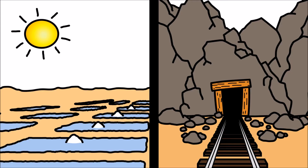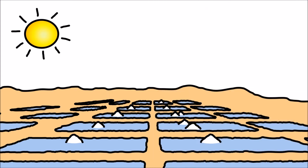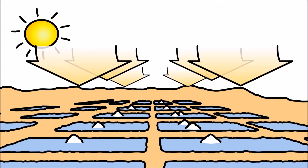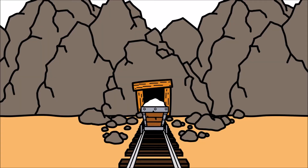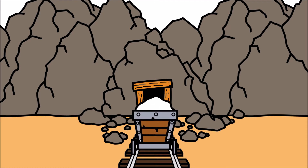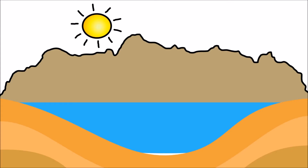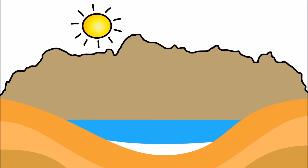Salt mostly comes from two places: from sea waters and salt lakes, when the sun dries out the shallow ends, and from salt mines. Salt mines are places that used to be underwater. The water in these areas dried up and large deposits of salt were left behind.